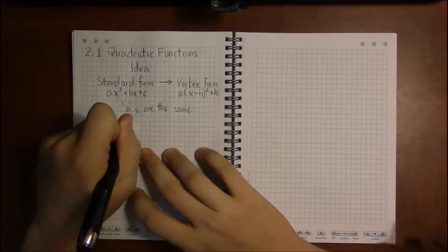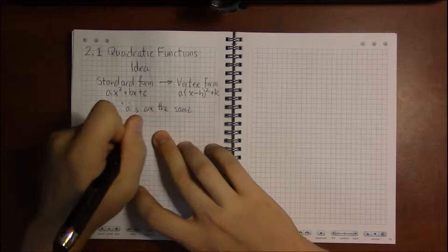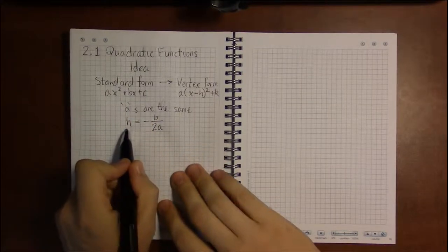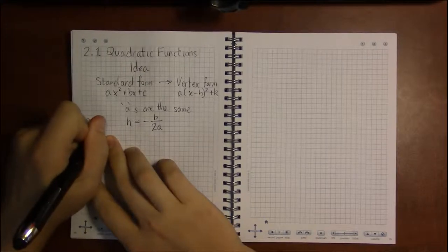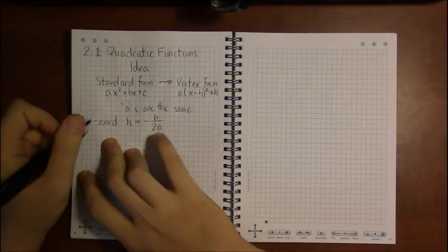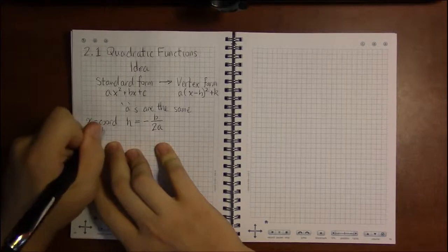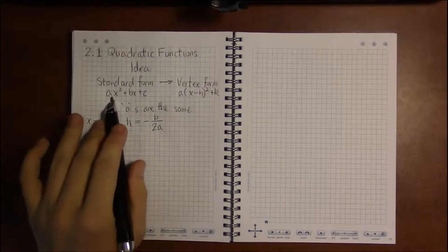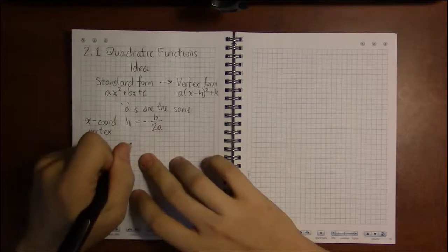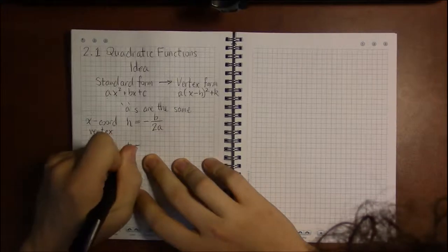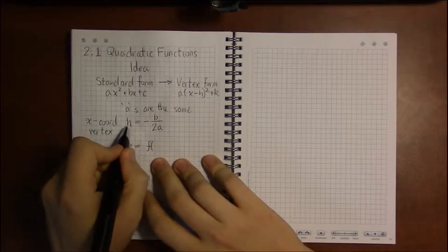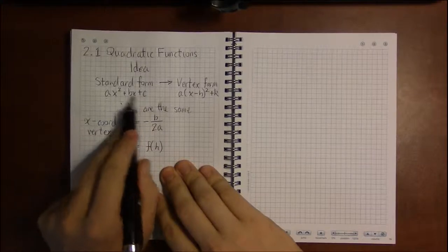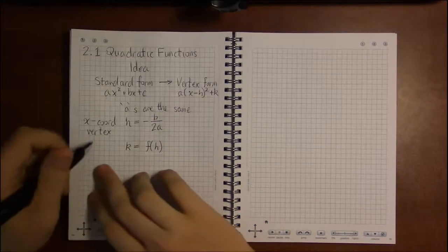Then we just need to deal with how to find h and how to find k. Well, if you take calculus you will learn where this formula comes from. But for now, we just have to memorize that the x coordinate of the vertex is simply minus b over 2a. So h being the x coordinate of the vertex is minus b over 2a. And then k, the y coordinate of the vertex, is simply the y coordinate at h. So you just plug in h in for x, and whatever you get out, that's your value for k.